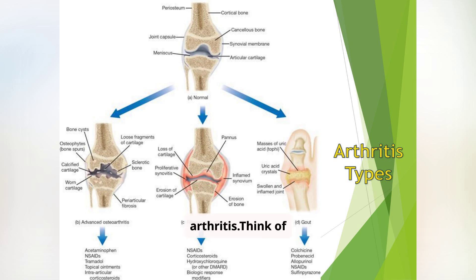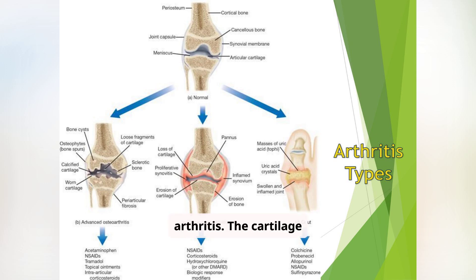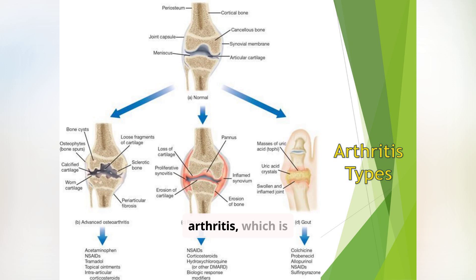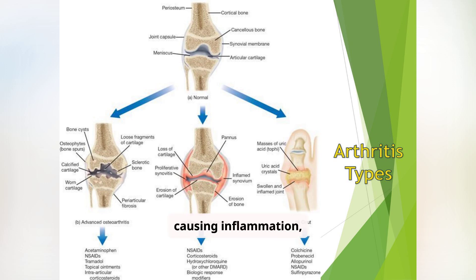Think of osteoarthritis as wear-and-tear arthritis — the cartilage in joints gradually erodes, like brake pads in an old car. Then there's rheumatoid arthritis, which is autoimmune. The body starts attacking its own joint lining, causing inflammation, pain, and eventual joint destruction.